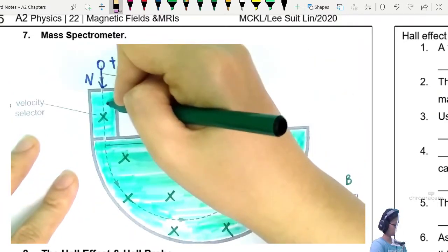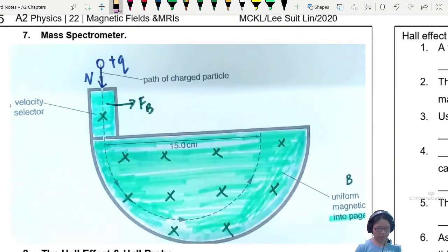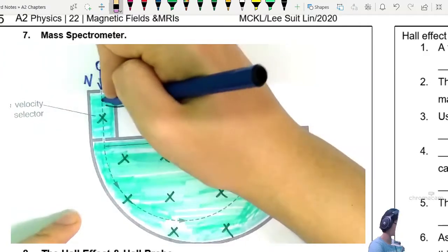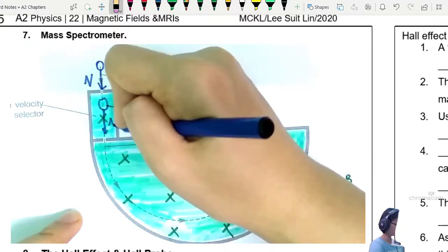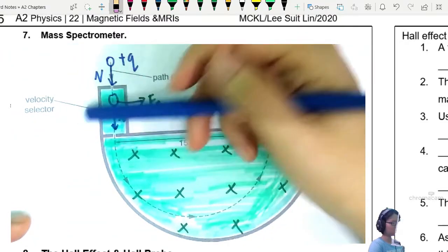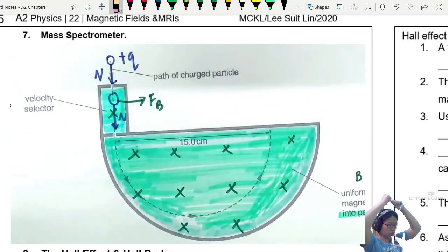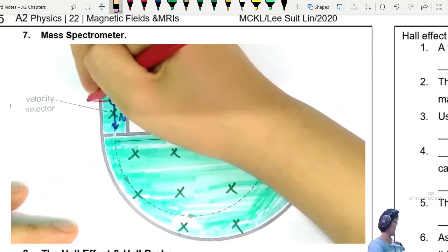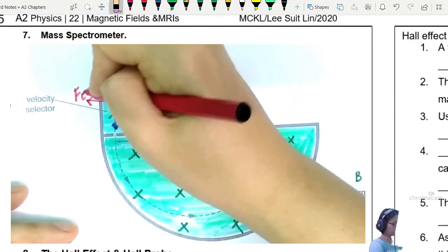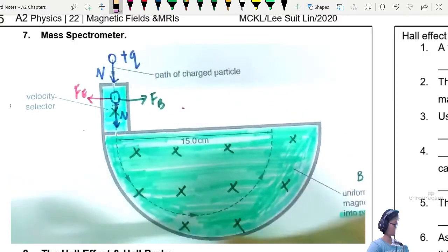The particle is here and FB is in this direction. To make sure it moves in a straight line, we need the electric force pulling in the opposite direction. Any particle that doesn't have speed V will deflect - it will turn upward or downward and collide with the wall of the velocity selector. So the direction of the electric field has to go against the direction of the magnetic force. If the electric force and magnetic force are equal, only a velocity of V will escape.